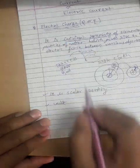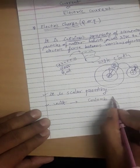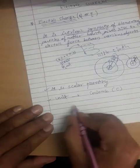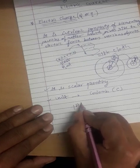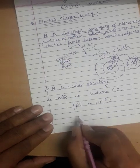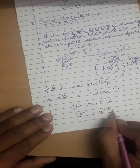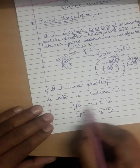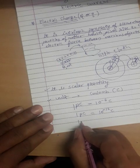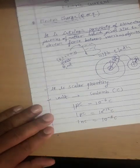The unit of electric charge is Coulomb, represented by capital C. For example: 1 micro = 10 to the power minus 6, 1 pico = 10 to the power minus 12, and 1 nano = 10 to the power minus 9. These are the sub-units we need to know.